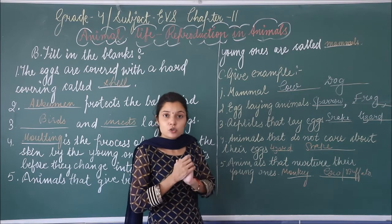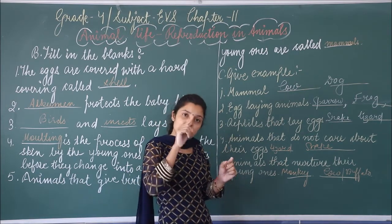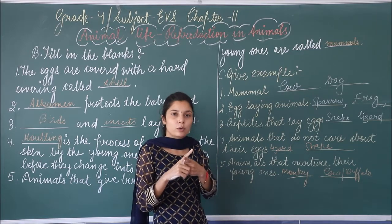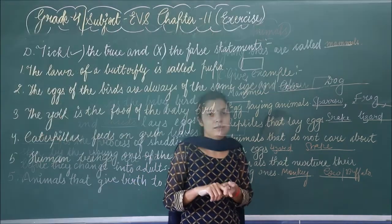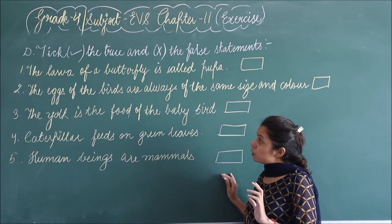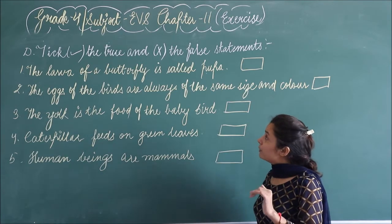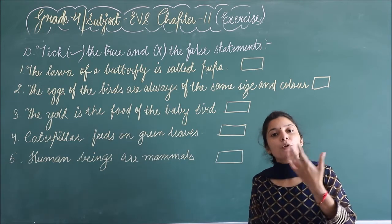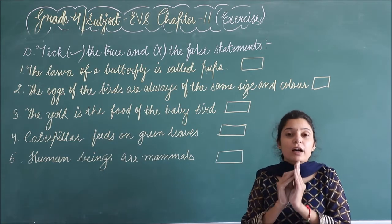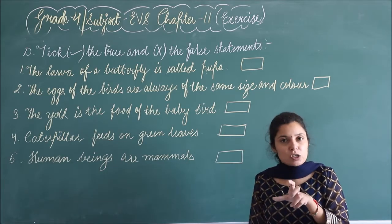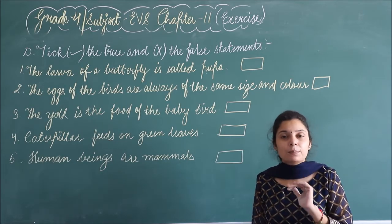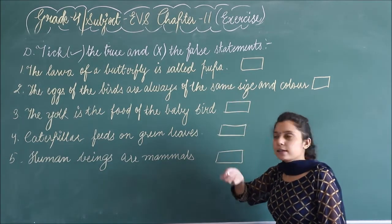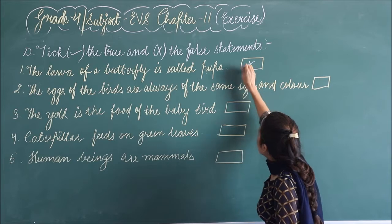Next is true-false. Aapne true statement ke liye tick lagana hai and false statement ke liye cross lagana hai. First question: the larva of a butterfly is called pupa. Butterfly ka jo larva hai, uske liye special term use ki hai — caterpillar. Toh ye wrong hai, usko pupa nahi bolte, kyunki pupa ek alag stage hai. Yahan pe hum cross lagayenge.